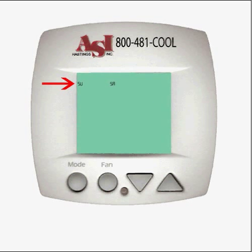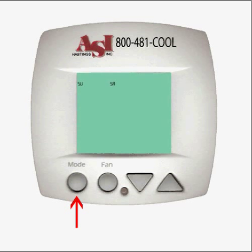Saturday and Sunday are displayed. Press the mode button and continue programming Saturday and Sunday the same way you program the weekdays, setting start times and temperatures for each of the four time periods.